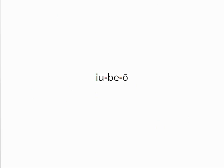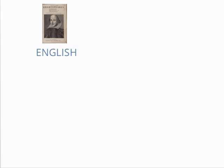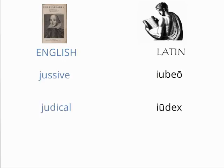Iubeo has three syllables, not four. Note that English derivatives often indicate the consonantal nature of the i. For example, jusiv from iubeo, judicial from iudex.